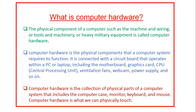Now, what is computer hardware? Here also you can define it in many ways. The first definition is that the physical component of a computer — such as the machine and wiring, or tools and machinery, or heavy military equipment — is called computer hardware. By another way, computer hardware is the physical components that a computer system requires to function. It is connected with a circuit board that operates within a PC or laptop, including the motherboard, graphics card, CPU, ventilation fans, webcam, power supply, and so on.